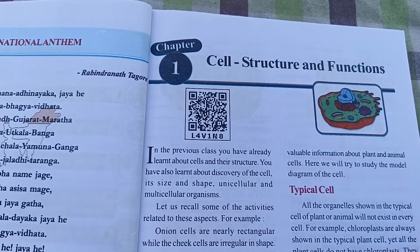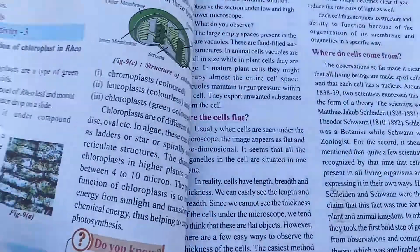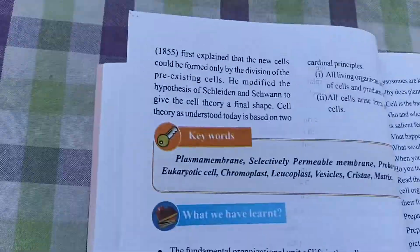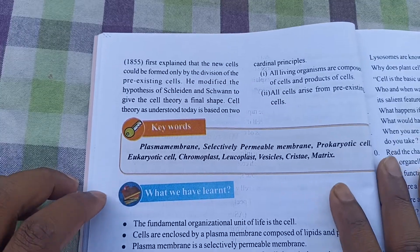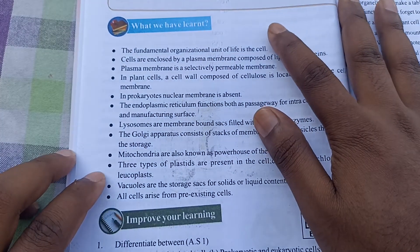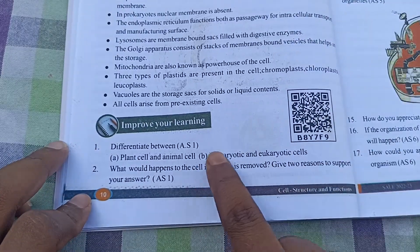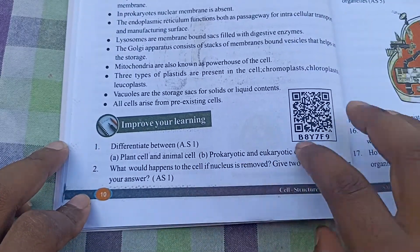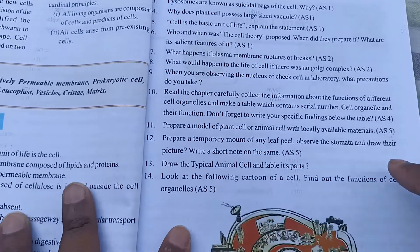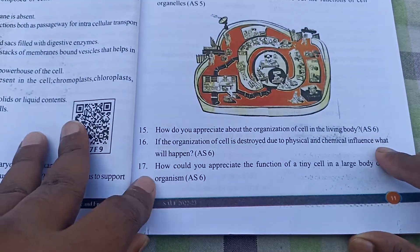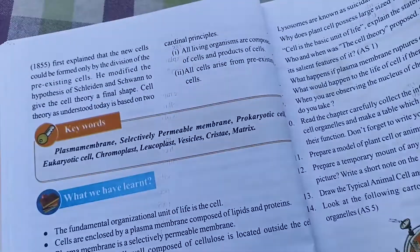First of all, let's look at the question and then we will move to the answer. So if you come here, this is our chapter. After that there is a keywords section, and then what you have to learn — it is already in the textbook. And then under 'Improve Your Learning' it is question and answer. There are two questions here, and after that there are questions only — till question 17.